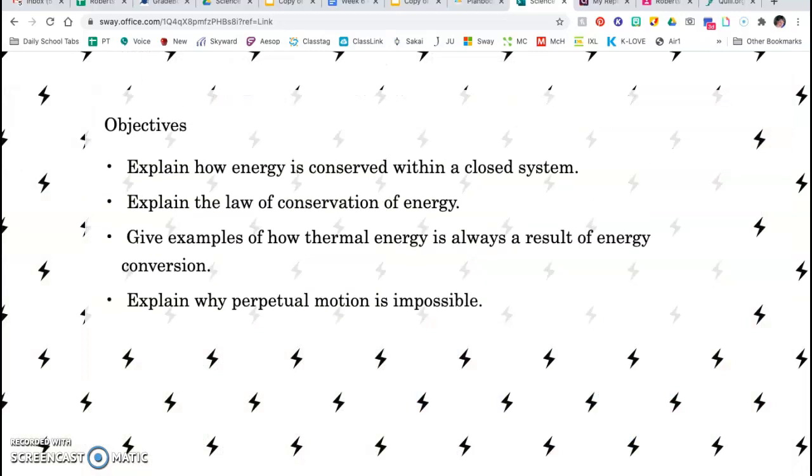There are four objectives today. You should be able to explain how energy is conserved within a closed system, explain the law of conservation of energy, give examples of how thermal energy is always a result of an energy conversion, and explain why perpetual motion is impossible.